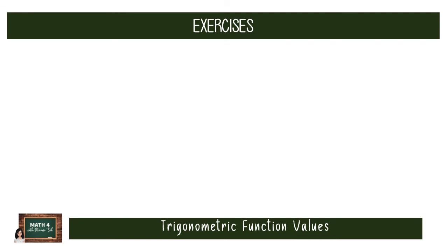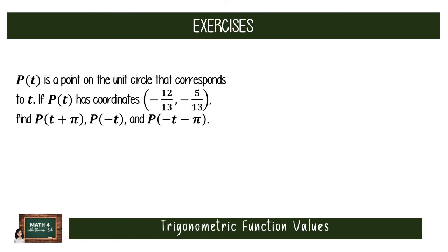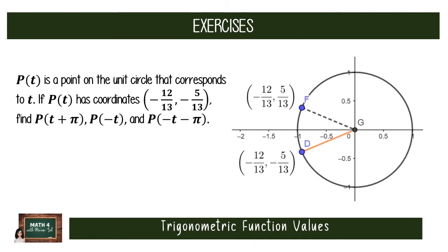Next, let's find the coordinates of the terminal point at negative t. This means rotating from (1, 0) with the same magnitude as t but in a clockwise direction, bringing us to the second quadrant with coordinates (−12/13, 5/13). Another way to find this is to reflect the original point along the x-axis, which gives the same answer. So the coordinates at negative t are (−12/13, 5/13).